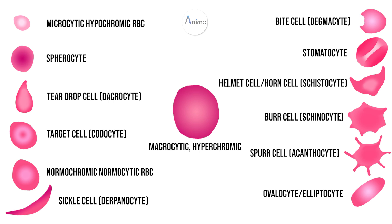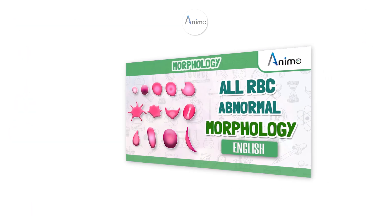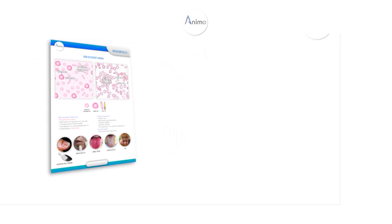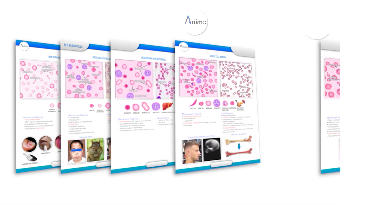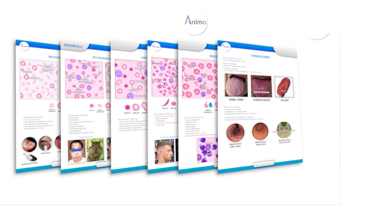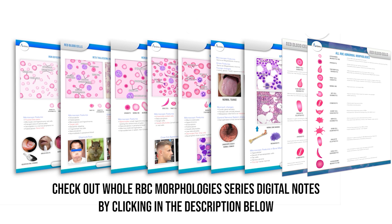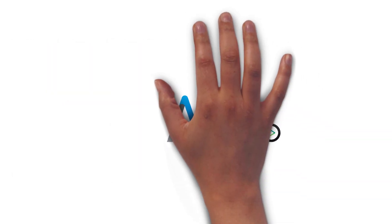So these were all of the abnormal RBC morphologies. Most of them are important from an exam point of view, and these are also very important for differentiation of blood smear for different causes of anemia. It was a small and brief video covering all of the important abnormal shapes of RBCs. For a detailed discussion, we will upload a special video covering the causes and clinical importance of these RBCs. See you next time.